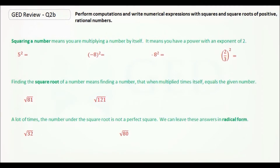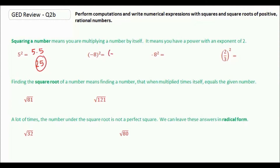Let's work with squares and square roots. Squaring a number means you're multiplying a number by itself — it means you have the power with an exponent of 2. So 5 squared would be 5 times 5, which equals 25. Negative 8 quantity squared would be negative 8 times negative 8. We learned that a negative times a negative is a positive.